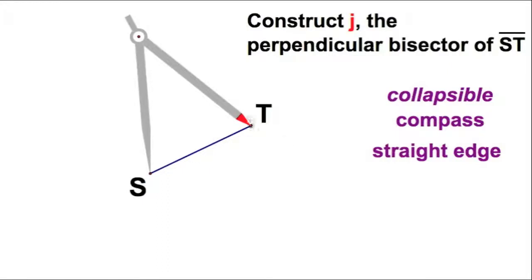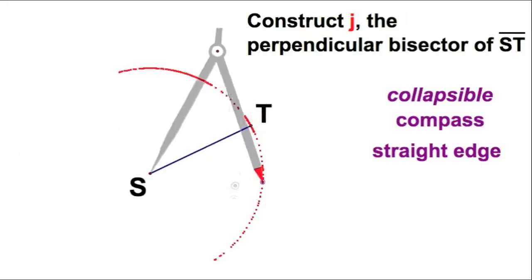And then we swing a little arc and say, yeah, that looks good. And we swing an arc up here where we expect the intersection of the two arcs. So this red arc represents all distances ST.